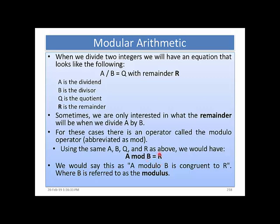This means we are not interested in the quotient but only the remainder — when we divide A by B, what the remainder is. So we say that A modulo B is congruent to R, where B is referred to as the modulus rather than the divisor.